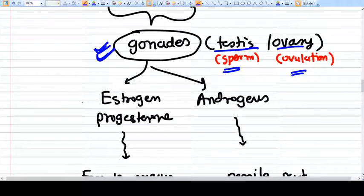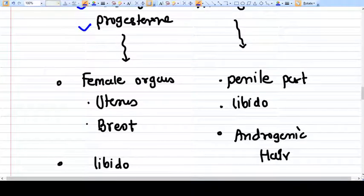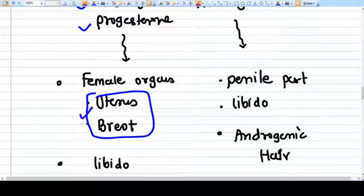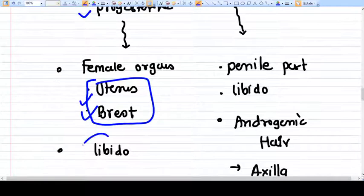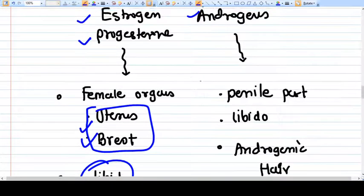The gonads will further produce sex hormones - estrogen, progesterone, and androgens. All three hormones are present in both sexes but in variable amounts. In the female, these hormones will make development of uterus and breast and also the libido.